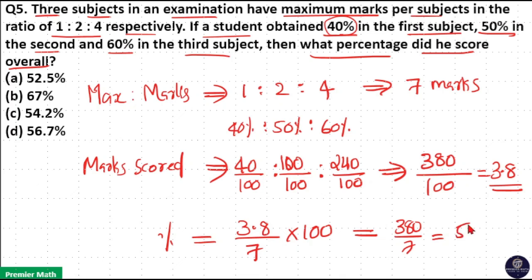7 goes 5 times in 38 with remainder 3. 30 by 7 equals 4.2, so option C is your answer.